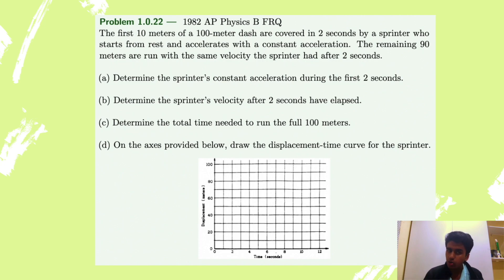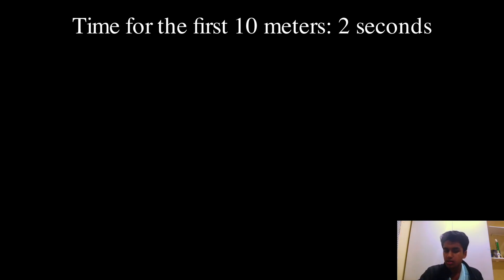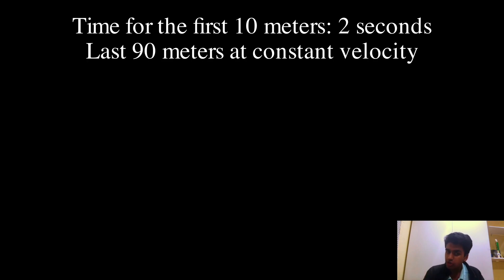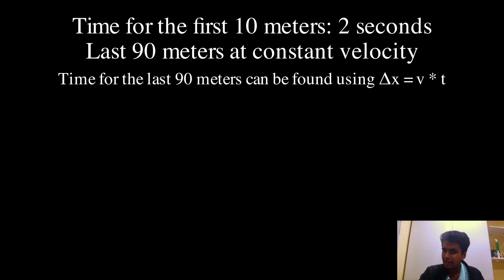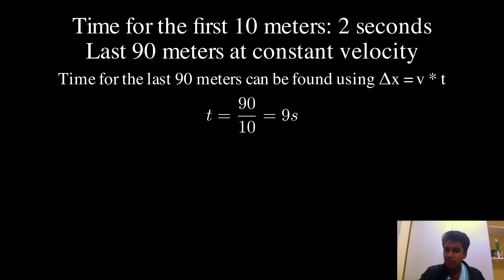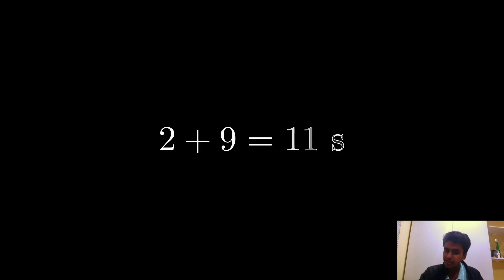Part C wants us to find the total time for the full 100 meters. We know that for the first 10 meters the sprinter takes two seconds. We need to find the time for the remaining 90 meters. The problem says that after the first 10 meters the sprinter moves with constant velocity. That constant velocity is 10 meters per second, which is the velocity after accelerating. Using time equals displacement over velocity, the remaining 90 meters is covered in 9 seconds. Adding 2 and 9, the total time is 11 seconds.